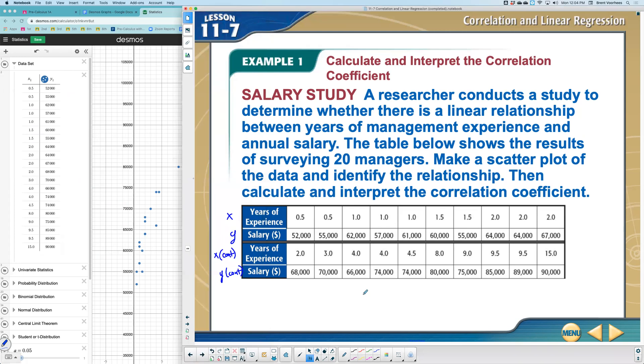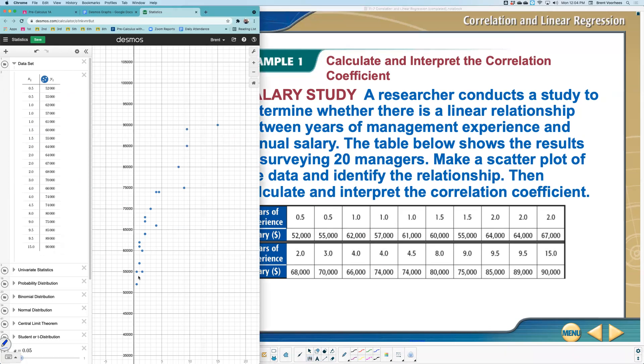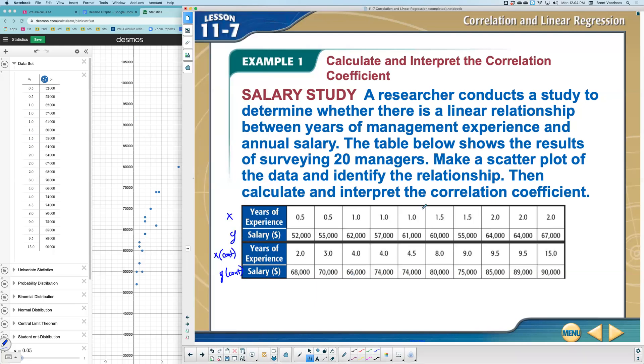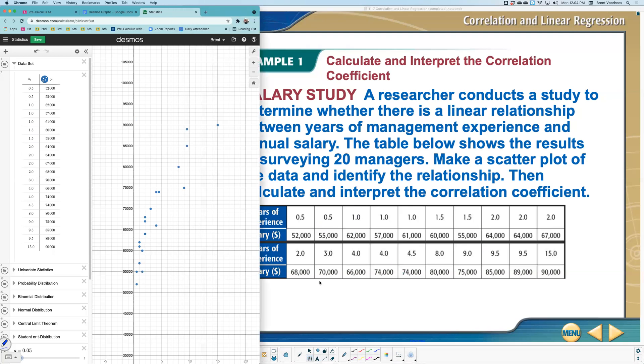Now it says here, a research company conducts a study to determine whether there is a linear relationship between the years of management experience and the annual salary. So we want to see, does this seem like a linear, is there a correlation going on here? And the table below shows 20 surveyed managers make a scatter plot. So that's what I just did here and identify the relationship. Well, here's what I could tell you. There is a positive correlation here, a positive relationship, meaning that it is related. The more experience you have, the more you tend to work.